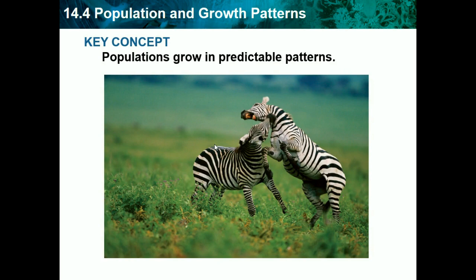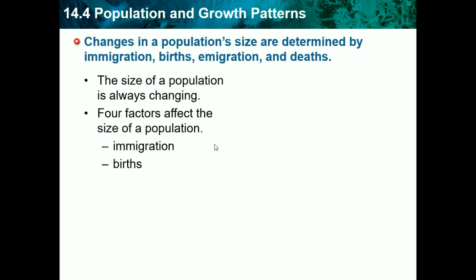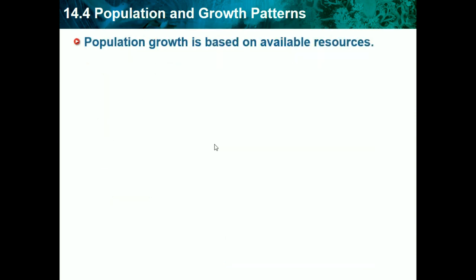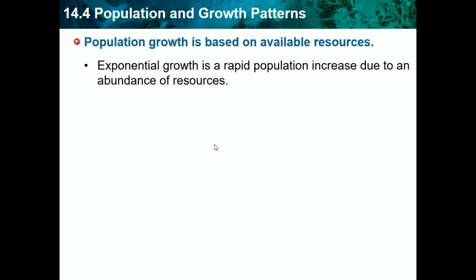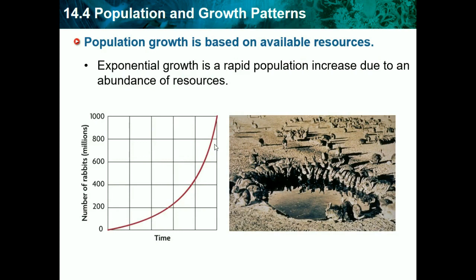Populations grow in predictable patterns. Changes in population size are determined by immigration, births, emigration, and deaths. Immigration is coming into the population, while emigration is things exiting the population. Population growth is based on available resources. Exponential growth is a rapid population increase due to an abundance of resources — for example, if water suddenly becomes available in the desert, more organisms will survive and produce more young, causing a population boom.